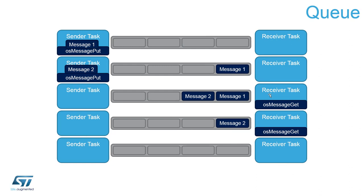Let's look at how tasks react when the queue is in use. With one sender task and one receiver task, the sender uses os_message_put to send messages into the queue. The receiver waits with os_message_get. If the sender sends another message in between, it's also placed in the queue. The receiver then extracts the first message, then the second — perfect FIFO: first message placed, first message received; second message placed, second message received.